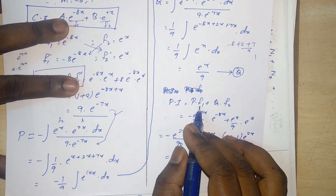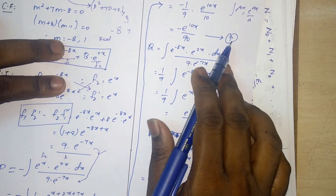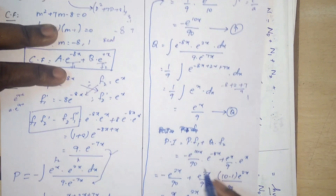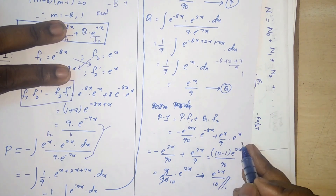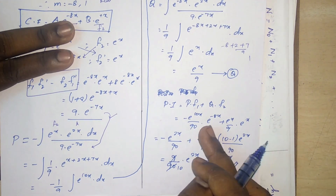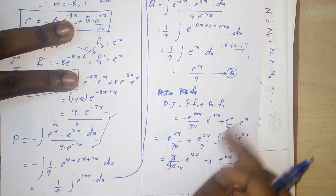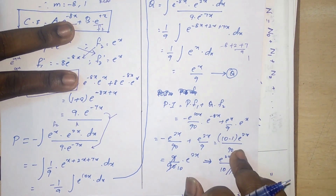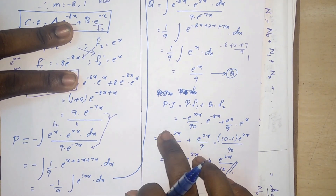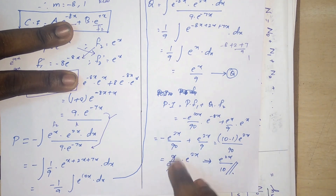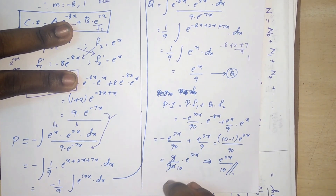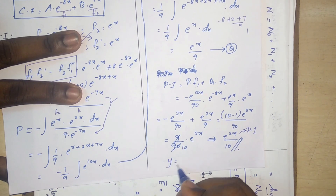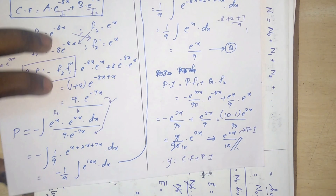The particular integral is PI = p·f1 + q·f2. Substituting and adding powers: the first term gives e^(2x)/90 and the second term gives e^(2x)/9. Simplifying with denominator 90, the particular integral is obtained and the final general solution is y = CF + PI.